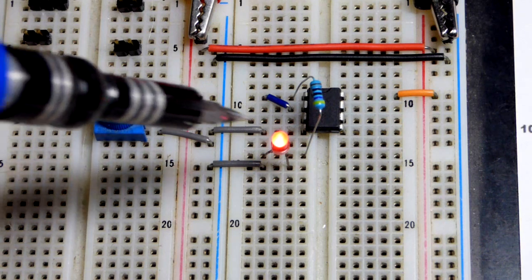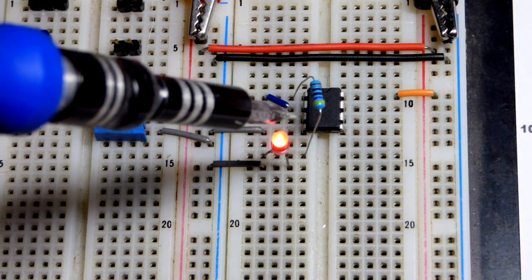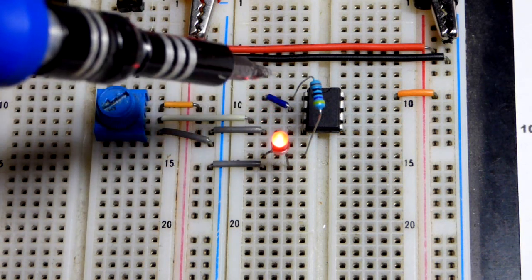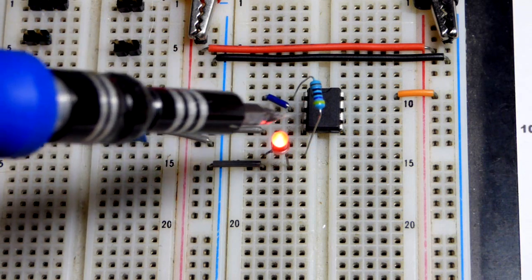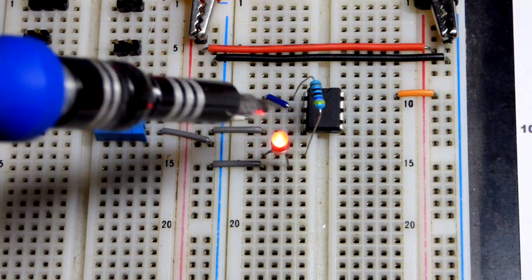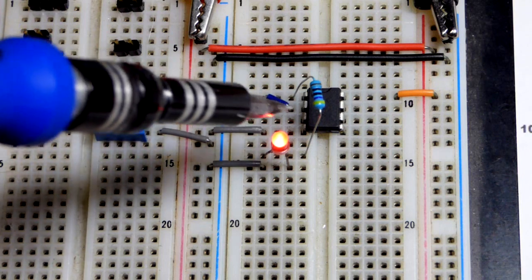But instead we are using the signal. This is an LM358 op amp wired as a voltage follower. So we're sending that to the non-inverting input. The output is connected directly to the inverted input there.